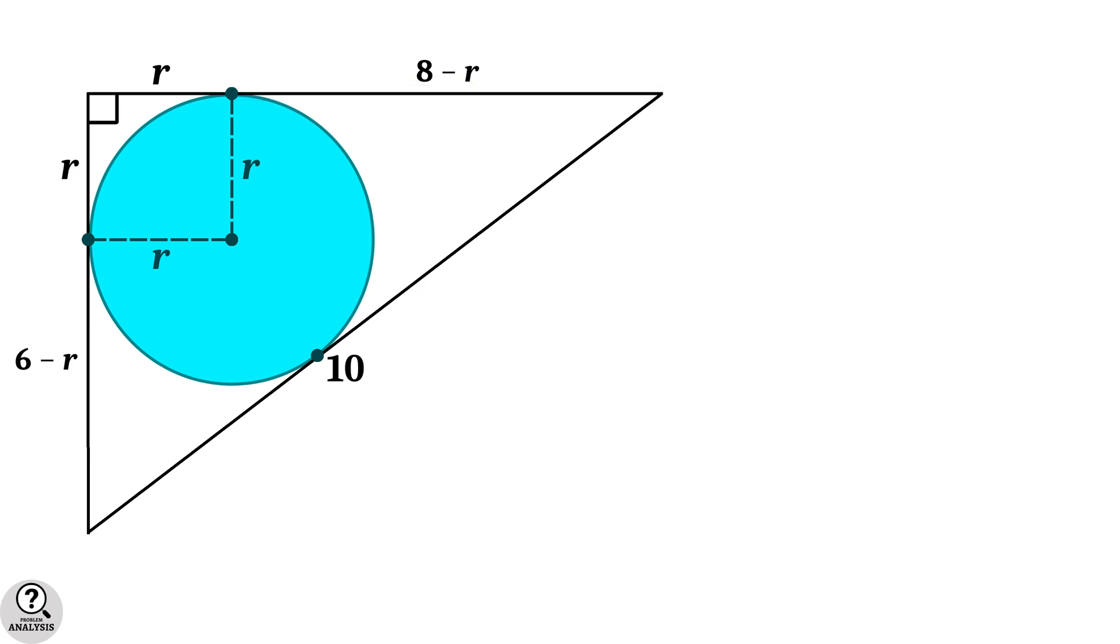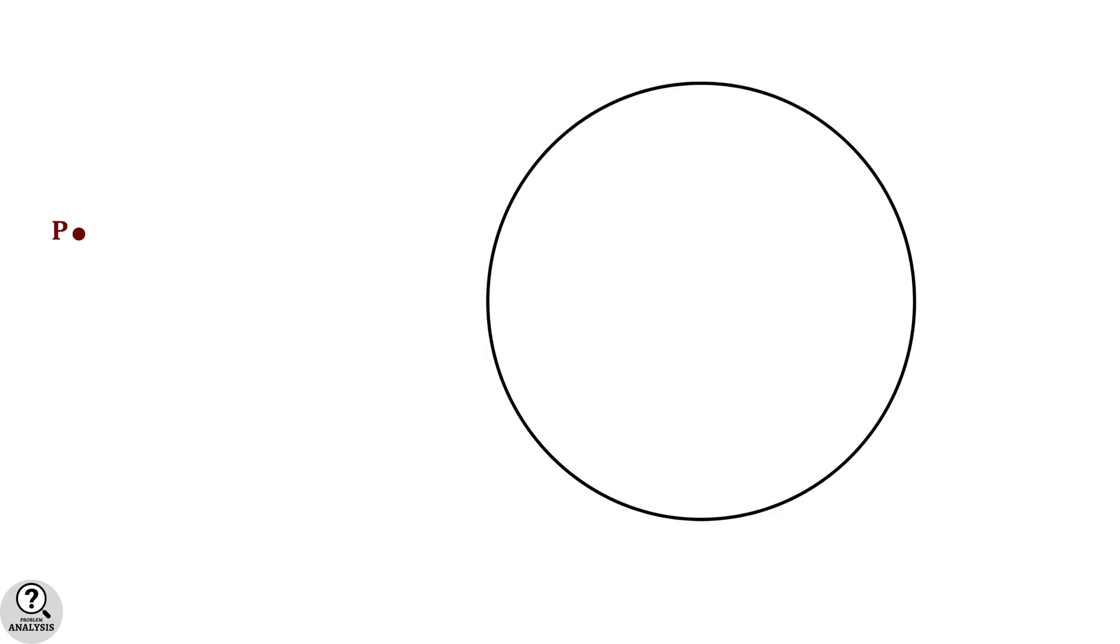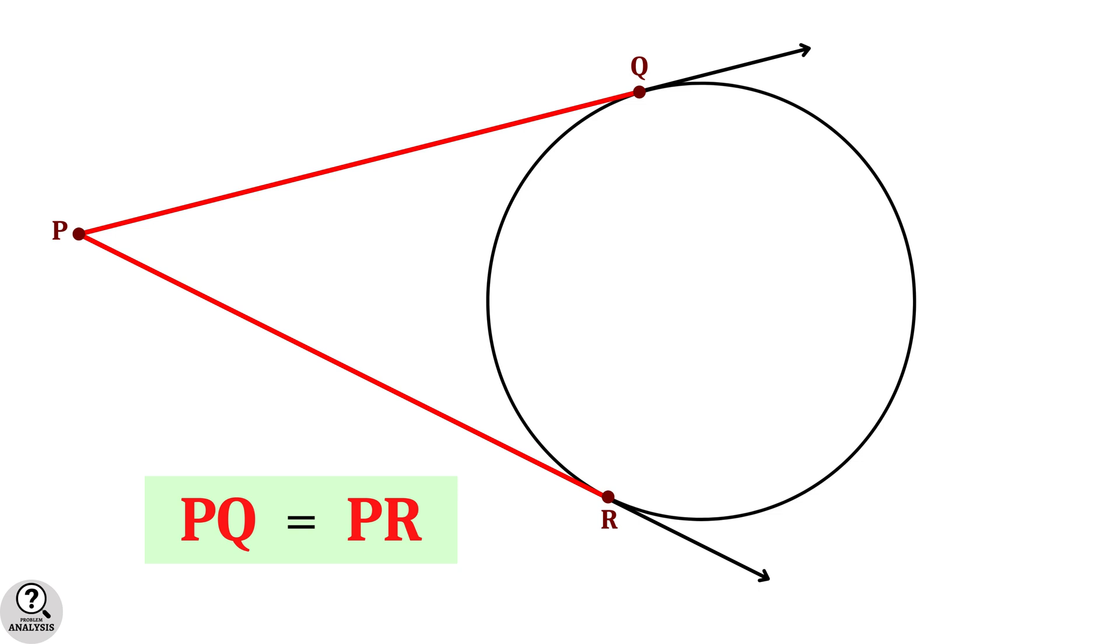Now note an important property of tangents to a circle. Consider a circle and a point P outside it. Draw two tangents from this point, touching the circle at Q and R. The lines PQ and PR are equal. That is, tangents drawn to a circle from the same point are equal in length.